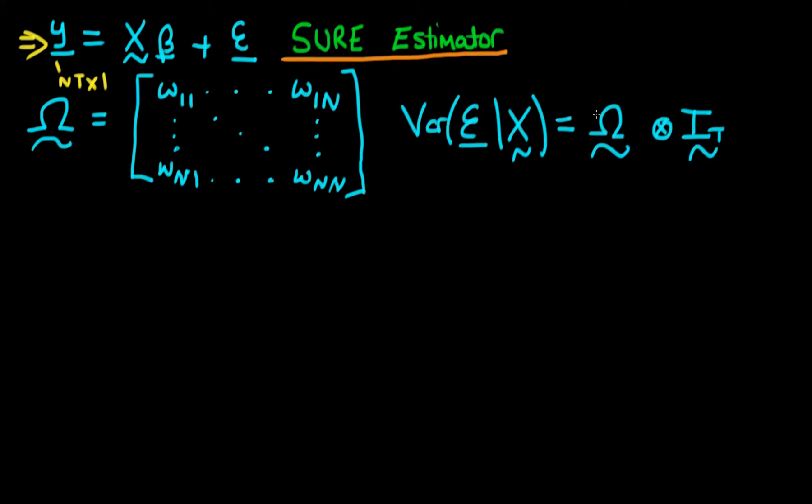And the matrix omega is actually given over here on the left. It's essentially just the correlation between the errors between different individuals or the contemporaneous correlation between individuals' errors. And we can think about this entire matrix as being represented by a larger matrix sigma, which has dimensions nt by nt.